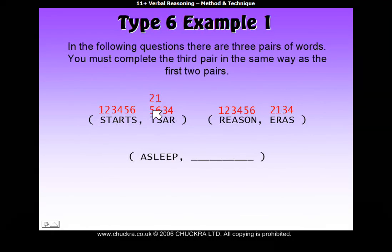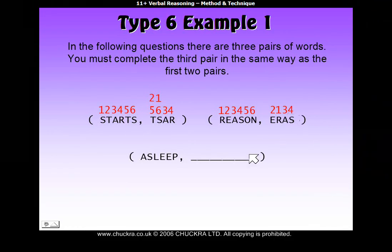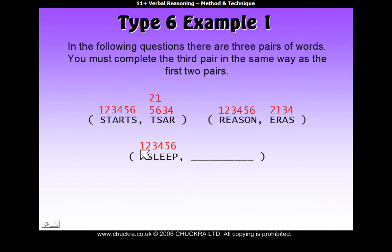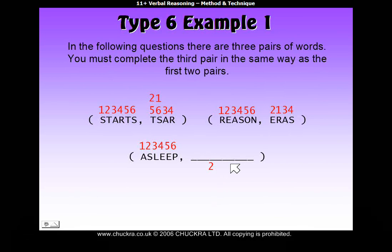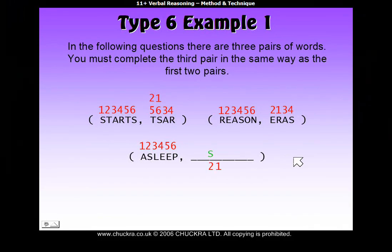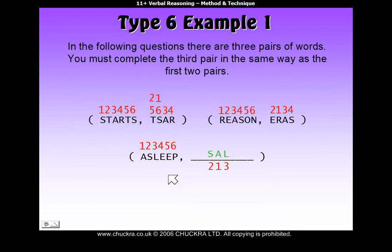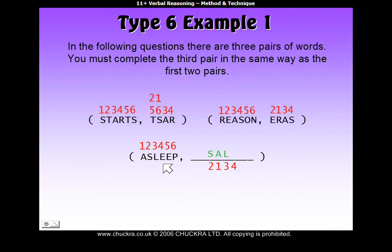We can get rid of the alternatives. We know our rule is the second position, the first position, the third position, then the fourth position. So let's find our answer by numbering 'asleep': first, second, third, fourth position and so on. To find the first letter of our answer, we look at the second position in 'asleep', which is S. Then the first letter, which is A. Then the third letter, which is L. And then the fourth letter, which is E. So we get the answer 'sail'.